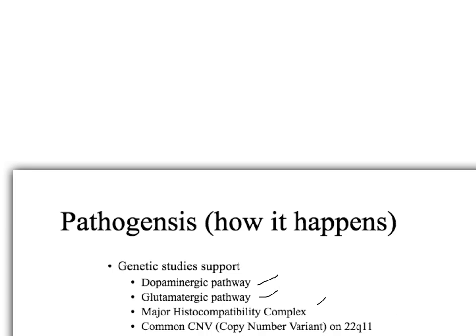Because these genetic mutations are not seen in every case, schizophrenia is probably a heterogeneous disease — a set of symptoms caused by several different underlying diseases that we haven't yet been able to fully isolate and identify.